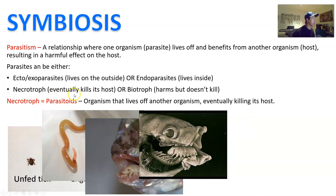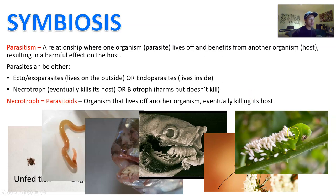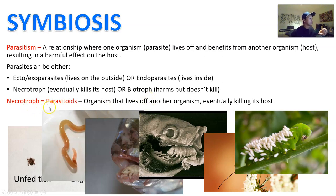Parasites can also be what we call a necrotroph — 'necro' meaning death — which means it's going to eat the host to death. There can also be a biotroph, which harms but doesn't kill. A necrotroph example is a parasitic wasp that lays its eggs in its prey, and eventually that larva hatches inside the prey, kills it, and eats it for nutrition. When a necrotroph kills the host, we often also say that necrotroph is a parasitoid — it lays something in there, kills that thing, and uses it as food.